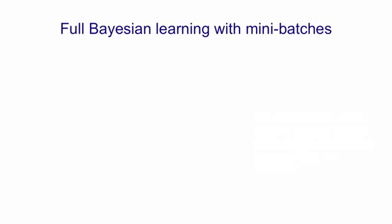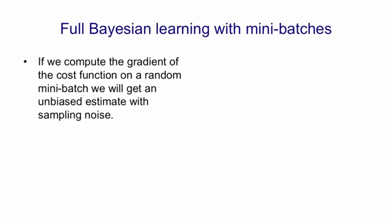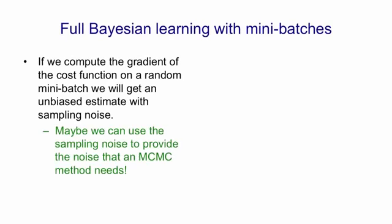Full Bayesian learning can actually be done with mini-batches. When we compute the gradient of the cost function on a random mini-batch, we're going to get an unbiased estimate but with sampling noise. And the idea is to use that sampling noise to provide the noise that a Markov chain Monte Carlo method needs. It's a very clever idea.